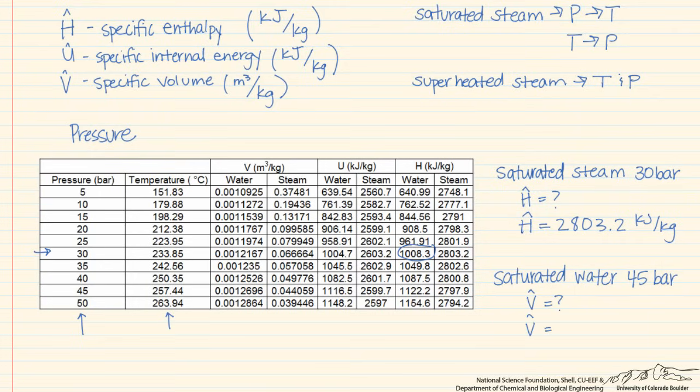So let's go to our chart again. So here we are at 45 bar, and here would be all the properties that we would need for saturated water or steam at 45 bar. Here we want saturated water, and we want the specific volume. So we would look at this value right here, 0.0012696 meters cubed per kilogram.